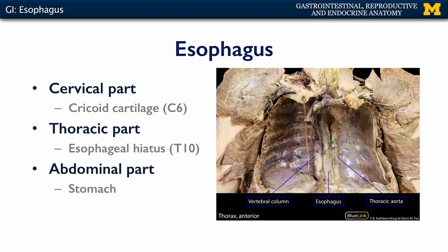Anatomically, there are three portions to the esophagus. The cervical part conducts a bolus down through the neck. The thoracic part begins at the root of the neck and extends down to the diaphragm, piercing it at the esophageal hiatus, which at rest is approximately at the level of T10, the 10th thoracic vertebra. Finally, the abdominal portion lies beyond the diaphragm and is adjacent to the cardia of the stomach.